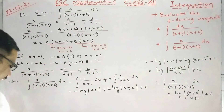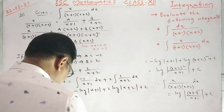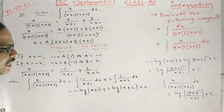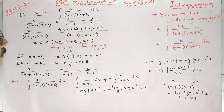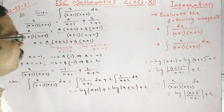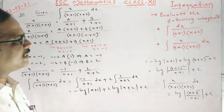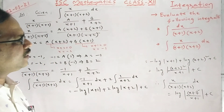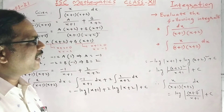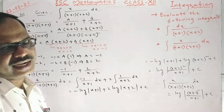Therefore, the integral of x/[(x+1)(x+2)] dx = log|(x+2)²/(x+1)| + C. That is the end of the second one. Hope it is clear. This exercise we are going to solve using partial fractions. Thank you.